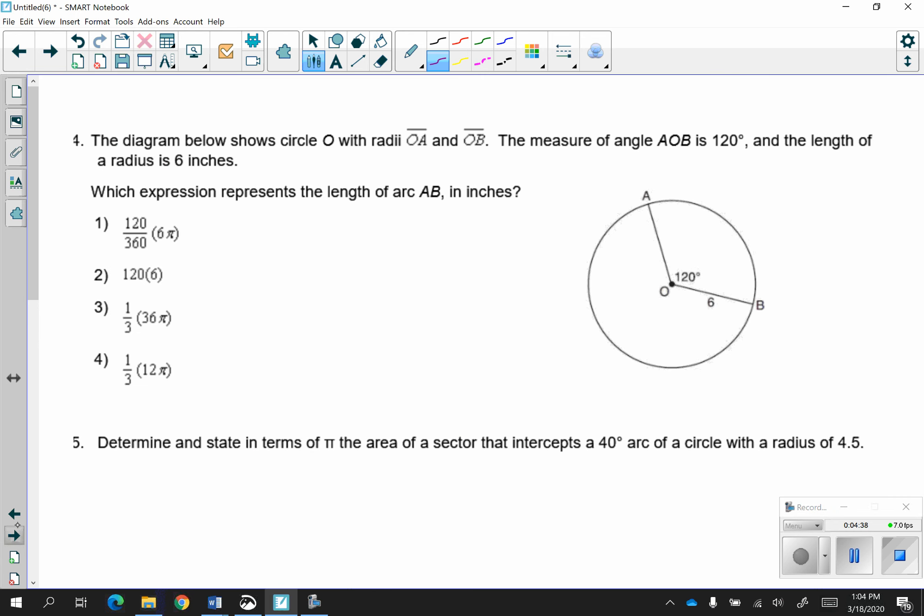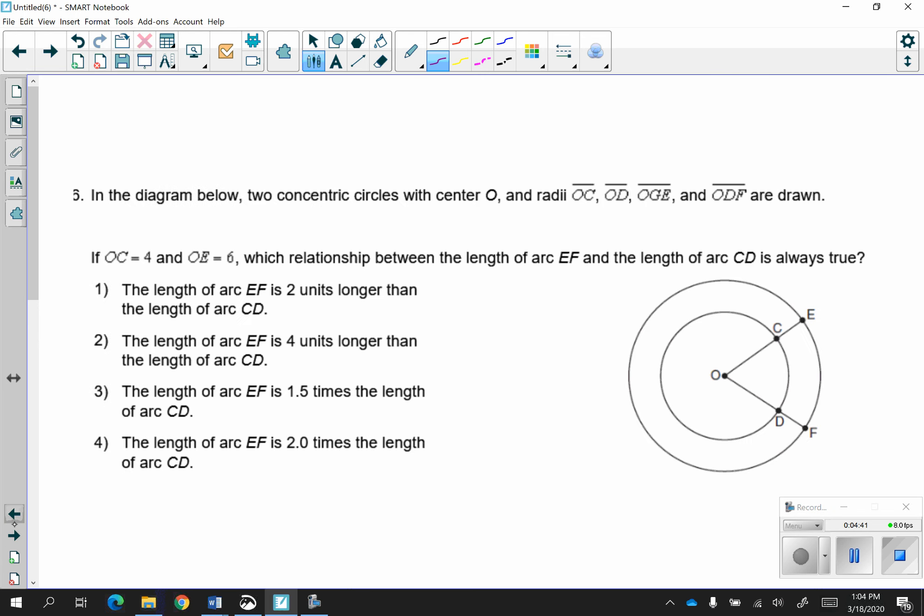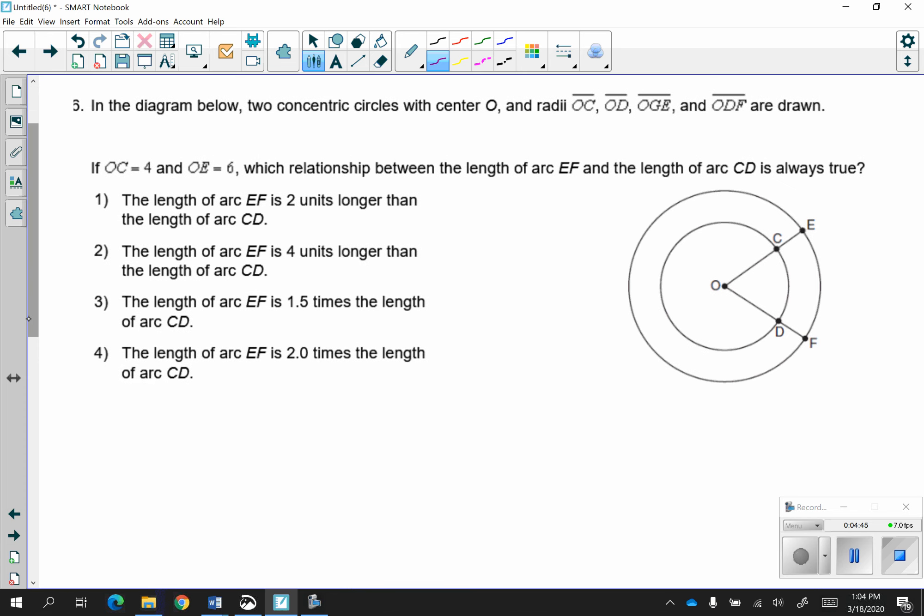The next one that we're going to look at is number 6. It says, in the diagram below, two concentric circles with center O, radii OC, OD, it should say OCE, and ODF are drawn. Concentric just means one circle inside the other. If OC is 4 and OE is 6, which relationship between the length of arc EF and the length of arc CD is always true? So what do we have to remember about this? We have to remember that circles grow proportionately.